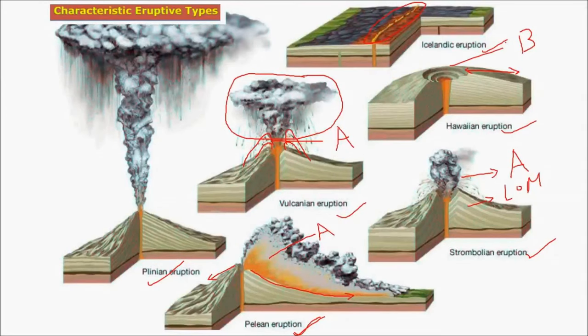The Plinian eruption is also called Vesuvian eruption, named after Mount Vesuvius in Italy. This type of eruption occurred a few thousand years ago, when huge amounts of gases were emitted, condensed, and precipitated, falling to earth and covering large land masses, killing thousands of people. The lava in this type is also acidic and does not flow through larger distances.